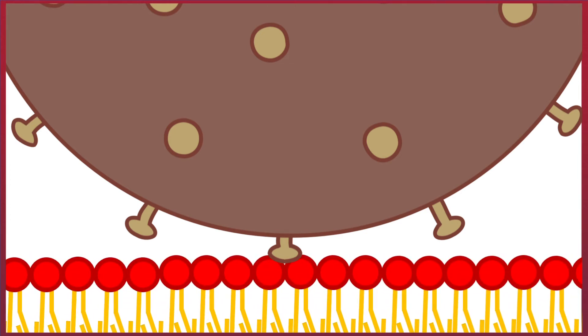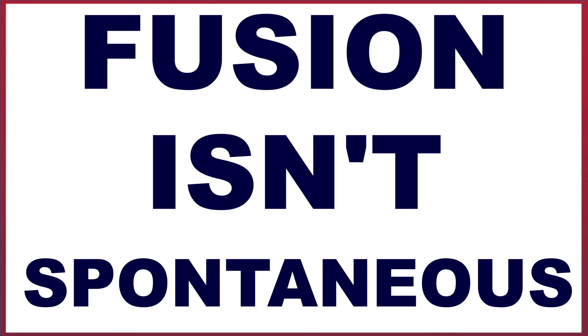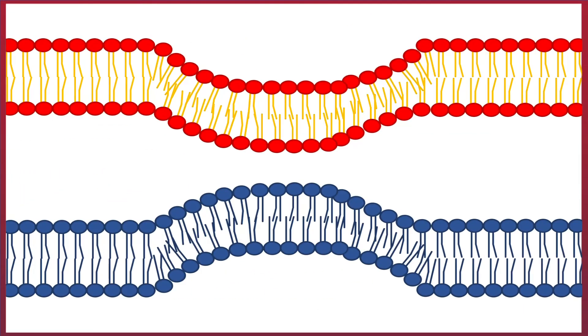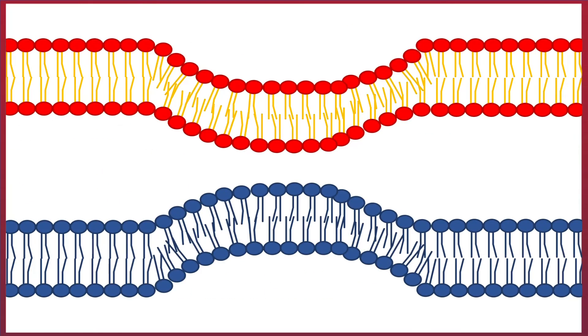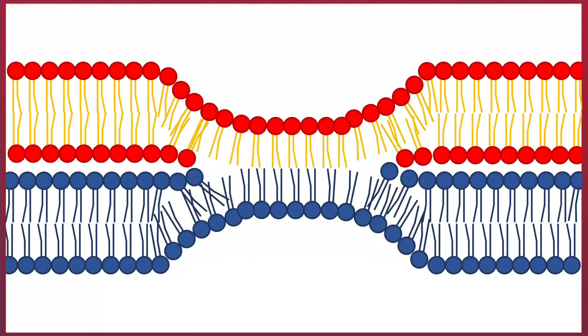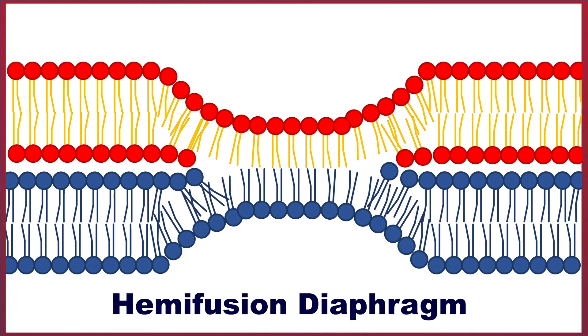If binding occurs, then the two membranes would remain distinct. The fusion doesn't happen spontaneously. This occurs in two major steps. The first is that the two monolayers merge in a process called hemifusion, forming one big phospholipid bilayer, which is known as the hemifusion diaphragm.